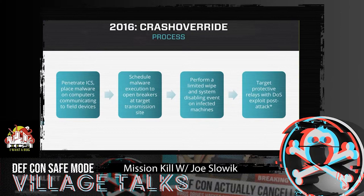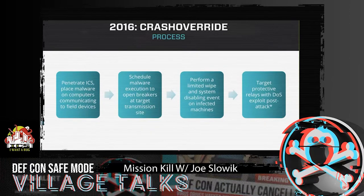The way this attack worked: first, penetrate the industrial environment and place malware on computers that can communicate to field devices controlling the breakers; then schedule that malware to open breakers at the target transmission site in a coordinated effort. There was also some after-effect — limited system wipe and disabling events on infected machines that induced the loss of SCADA control in the specific environment. Then there was a protective relay denial-of-service that took place post-attack, which becomes more significant when you look at this attack in terms of process dependencies.